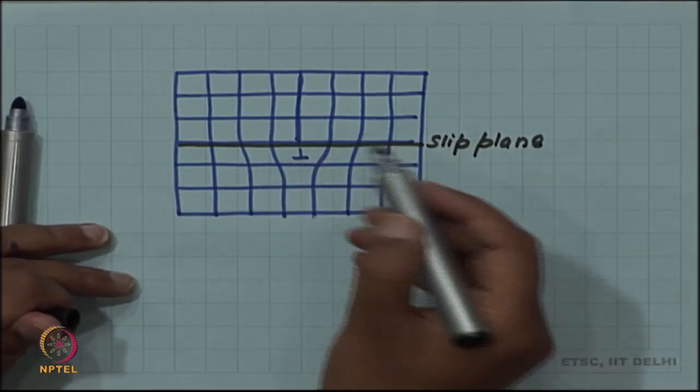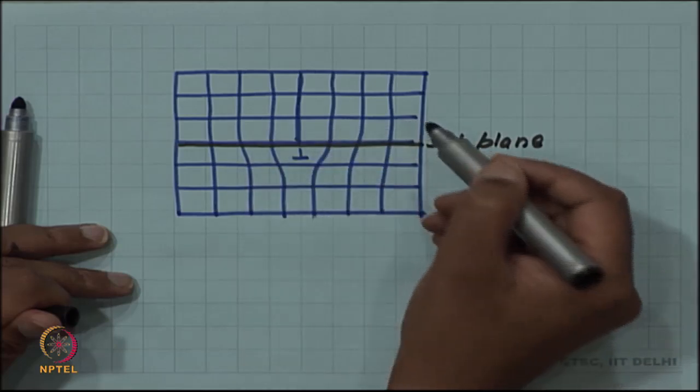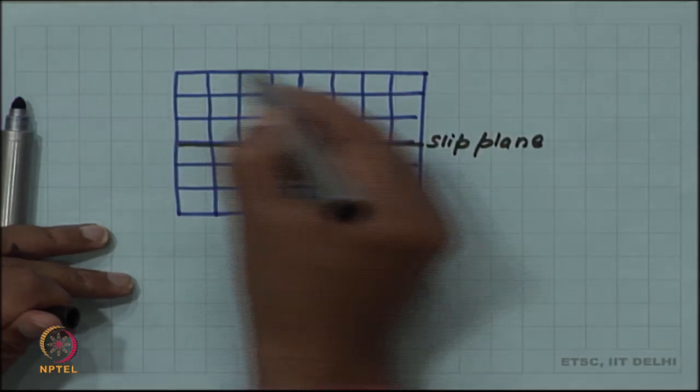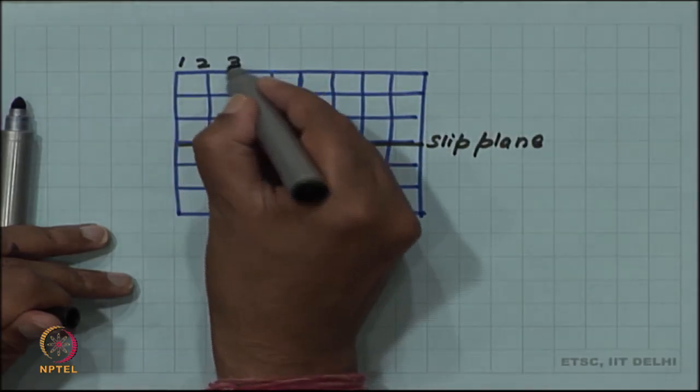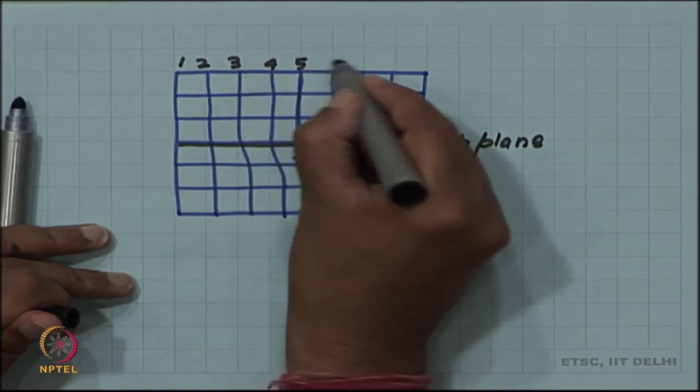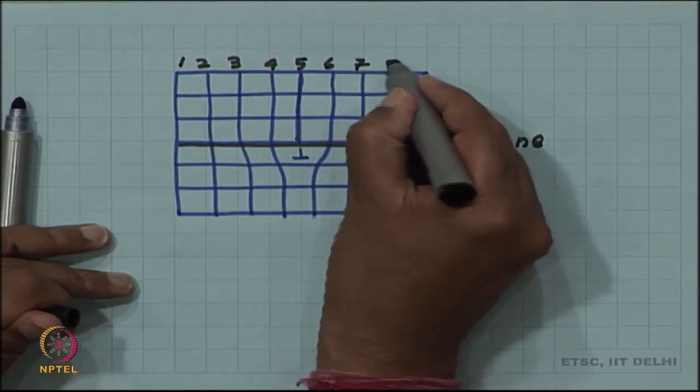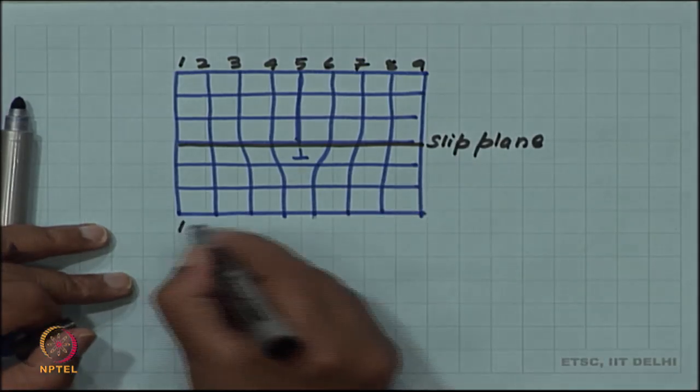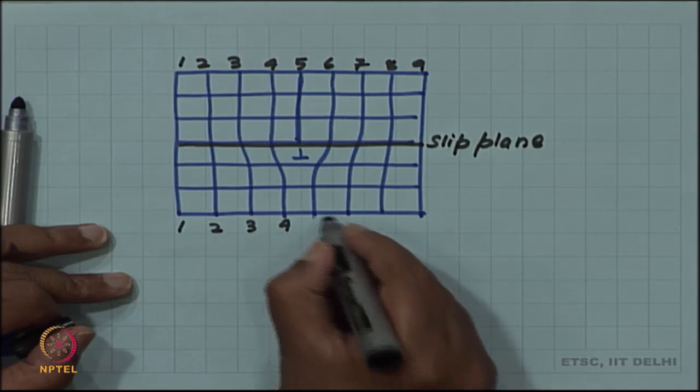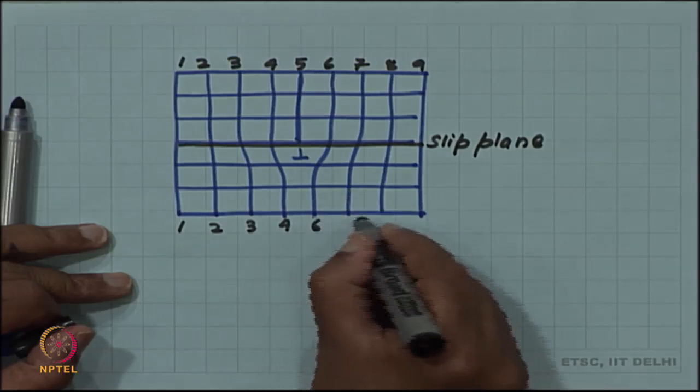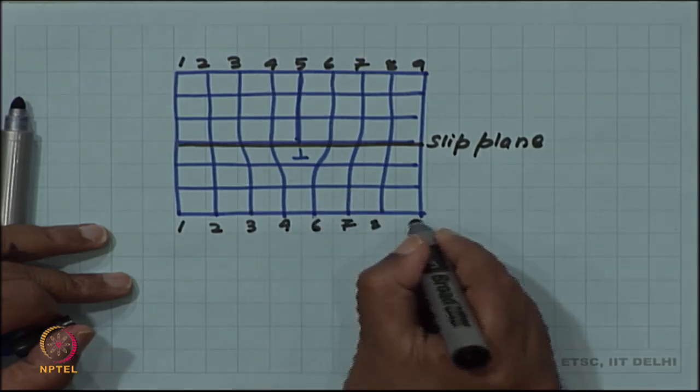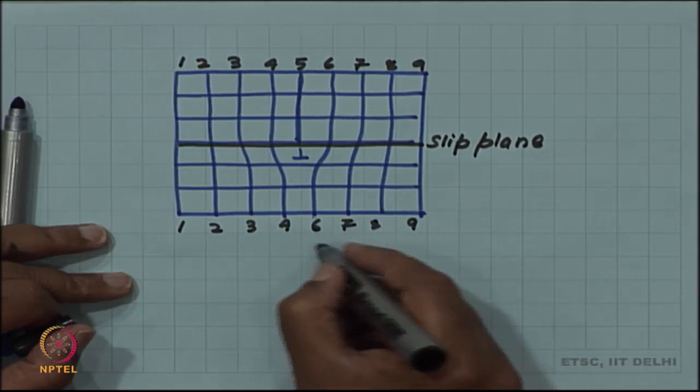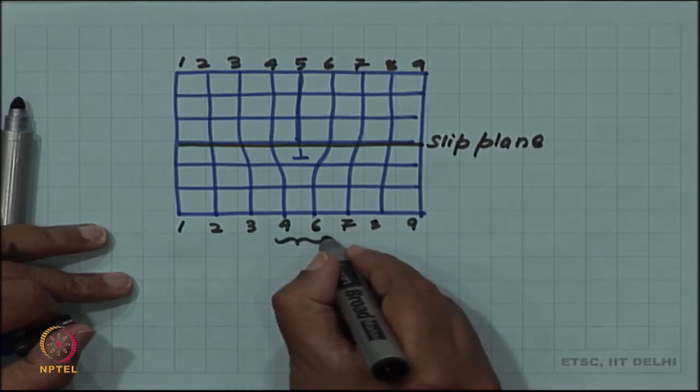Above the slip plane you have one more plane. In this case for example, 1, 2, 3, 4, 5, 6, 7, 8, 9 planes, whereas below you have only 1, 2, 3, 4, 5 is missing, 6, 7, 8 and 9. Actually only 8. One plane is missing here.